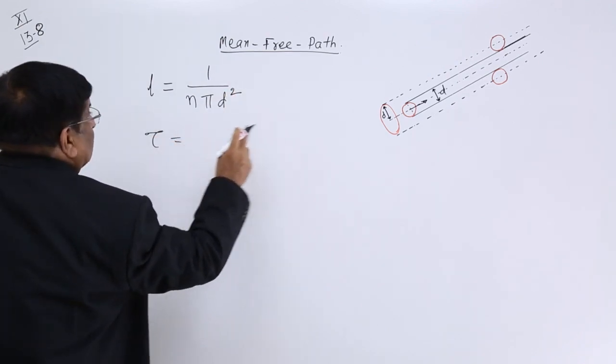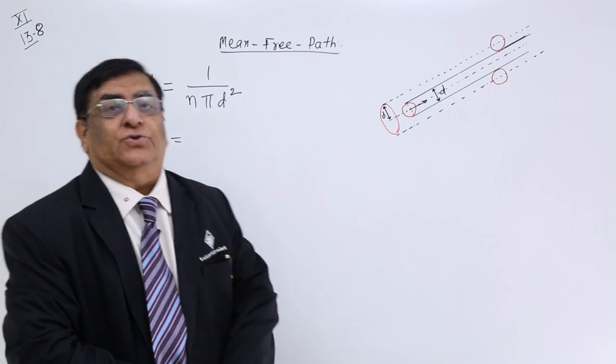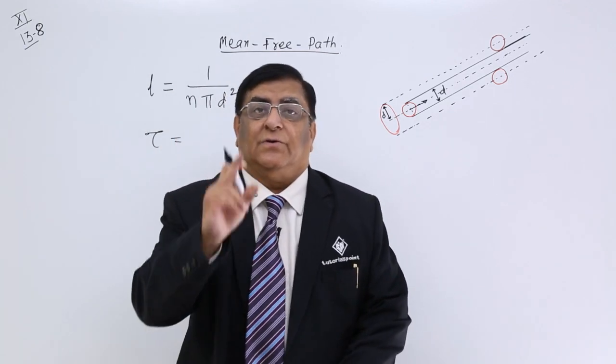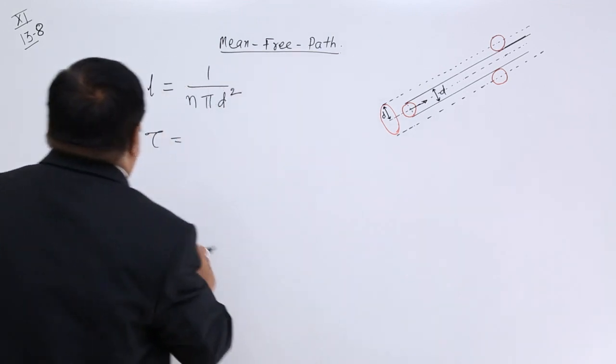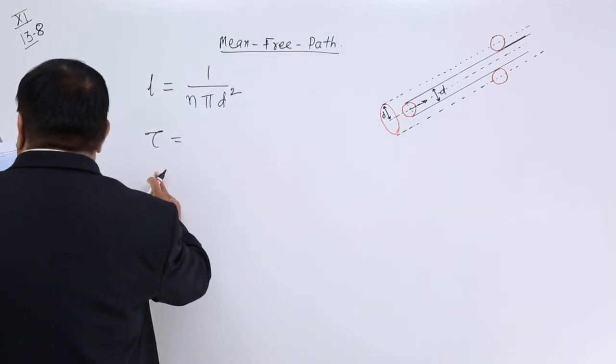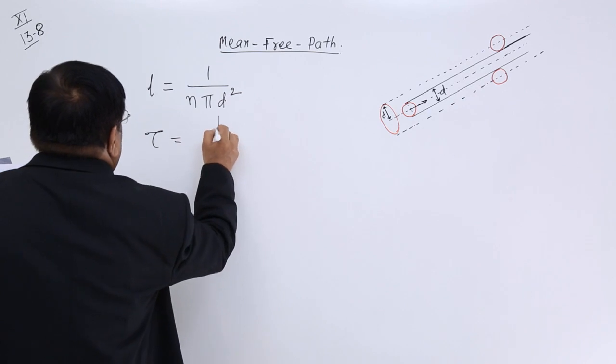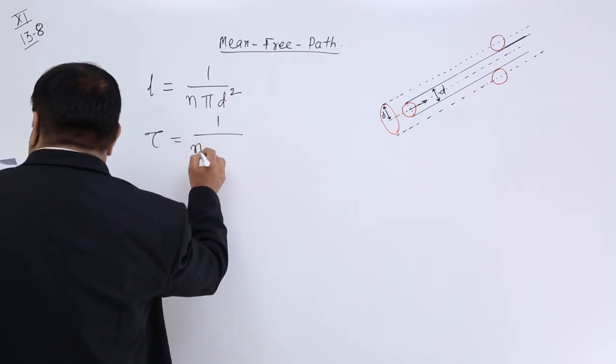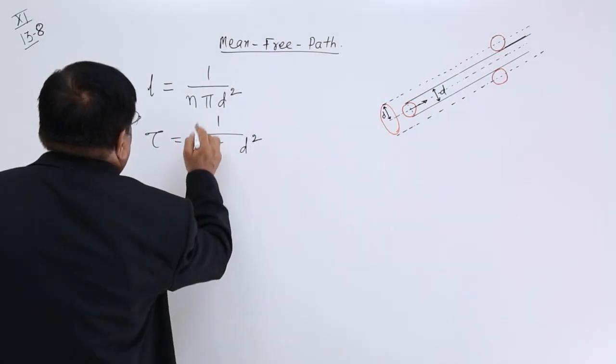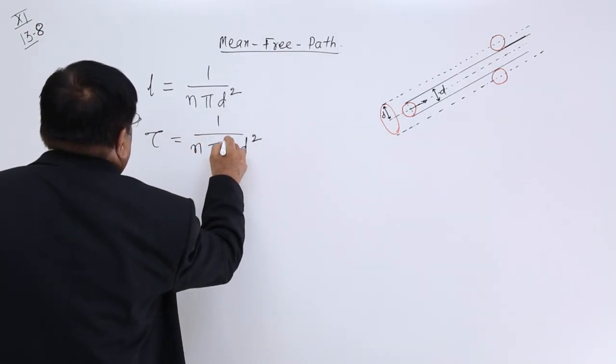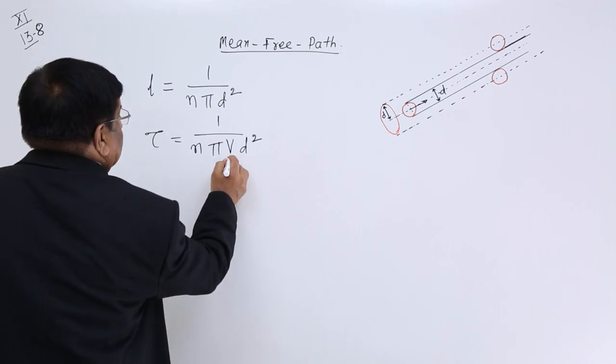Tau, that is time period between two consecutive collisions. We denote it by tau and this tau is 1 upon n into pi d square into velocity.